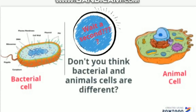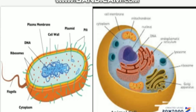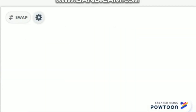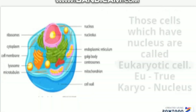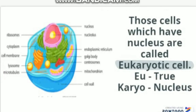Don't you think the plant cell and animal cell are different? Let's have a close-up. What did you observe? Yes, they are different because they are two different types of cells. Those cells which do not have a nucleus are called prokaryotic cells — 'pro' means before, 'karyo' means nucleus — for example, bacteria. Those cells which have a nucleus are called eukaryotic cells — 'eu' means true, 'karyo' means nucleus — for example, animal cells.